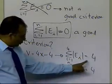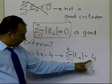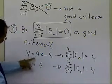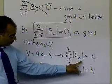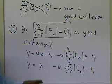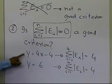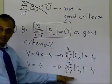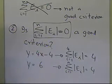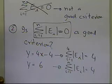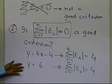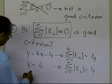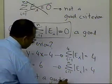Somebody might ask who are you to say that the sum of the absolute value of the residuals equal to 4 is the minimum you can get? Go ahead and try it — no matter what straight line you choose, the sum of the absolute values of the residuals is never going to be less than 4. That's a good exercise for you to do as homework. So again, we have a problem with not getting unique lines, and this is not a good criterion.